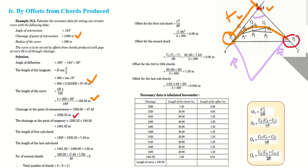To find T2, we add the length of curve to T1's chainage, because our alignment runs along this path — the tangent lines are only plotted to help set out the curve. Adding the length of curve to T1 gives us the chainage of T2, which comes out as 1481.02.